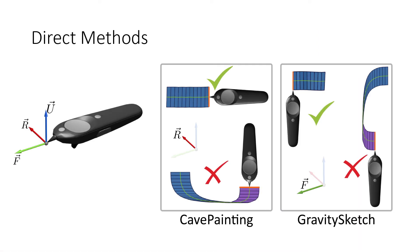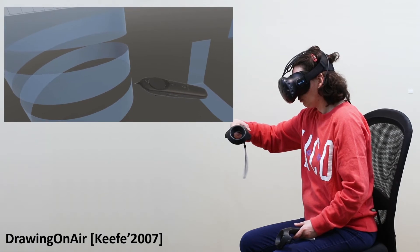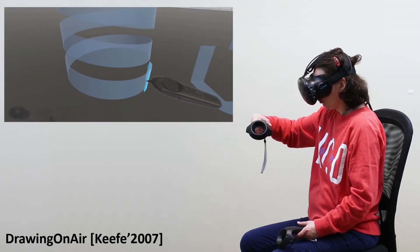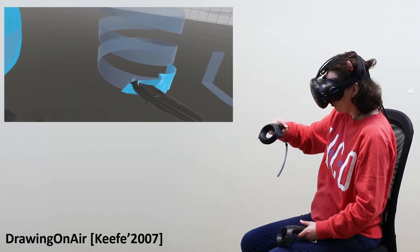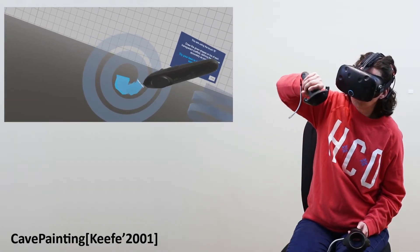We observe that existing methods compute the ribbon rulings using a fixed mapping from a specific controller coordinate frame axis. Direct methods use a fixed controller axis as the ruling direction, while cross product based methods use a fixed axis as an approximate ribbon normal and derive the ruling direction as the cross product of this axis direction and the controller trajectory. In either approach, directly controlling the ribbon geometry by rotating its ruling or normal requires users to rotate their wrists. Unfortunately, human ability to rotate their wrists during continuous motion is limited.